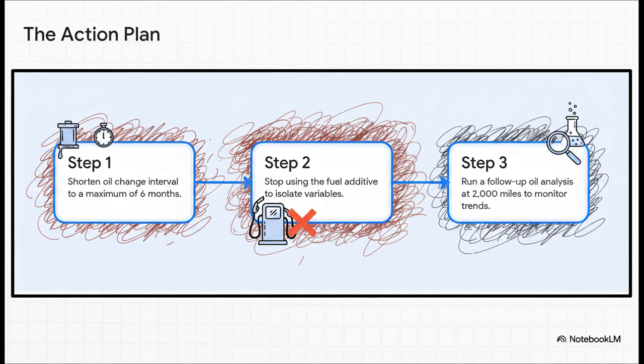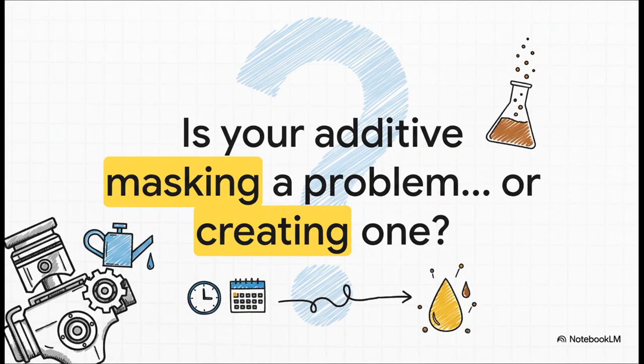With that diagnosis, the game plan from here is crystal clear. Number one: the oil needs to be changed every 6 months at the absolute maximum, it doesn't matter how few miles are on it. Number two: to solve that iron mystery once and for all, stop using the fuel additive. That's the only way to know what's really going on. And finally, number three: do another oil analysis in just 2,000 miles to see how things are trending and get a clean new baseline. And all of this leaves us with a pretty important question to think about. Could that performance additive you're pouring in your tank actually be masking a real problem? Or worse, could it be creating a whole new one you didn't even know about? It's a powerful reminder that you really need to question what you're putting in your engine and trust the data to tell you what's truly going on inside.